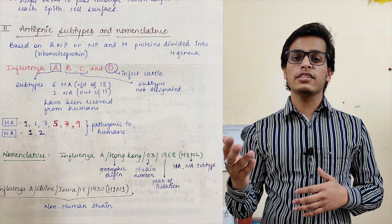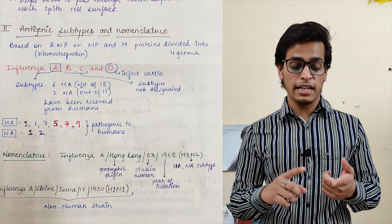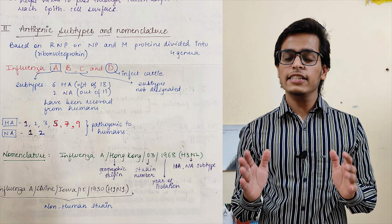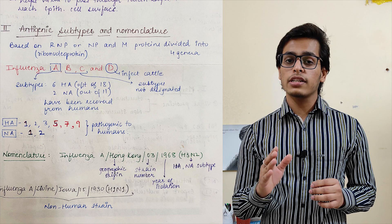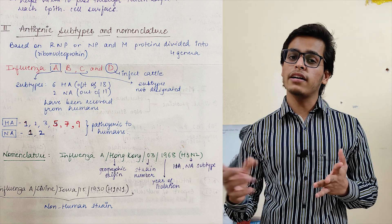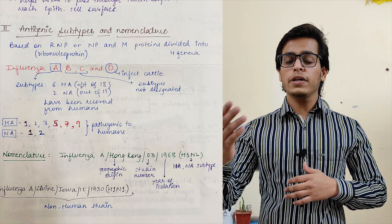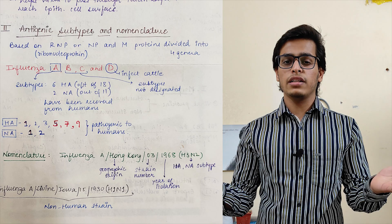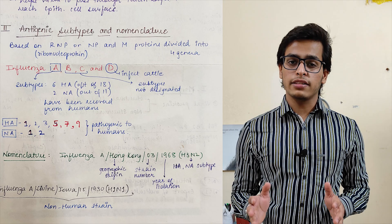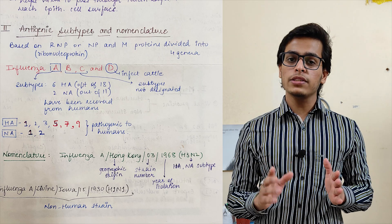So we make permutations and combinations and get names like H1N1, H5N8, etc. — H stands for Hemagglutinin and N stands for Neuraminidase. The 6 HA proteins that infect humans are: 1, 2, 3, 5, 7, and 9. The NA proteins are only 2: N1 and N2. We make permutations and combinations of these to form the various strain names.